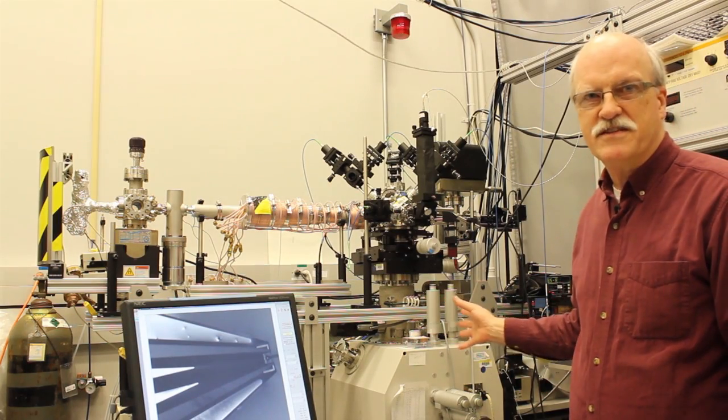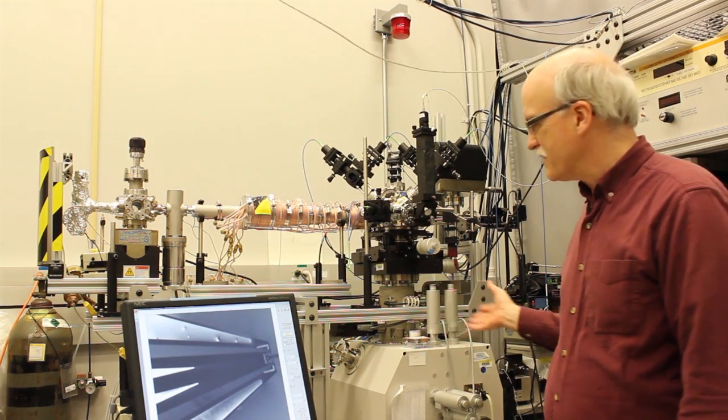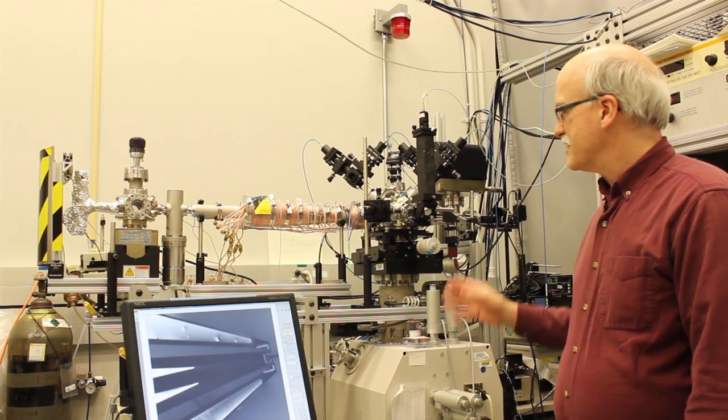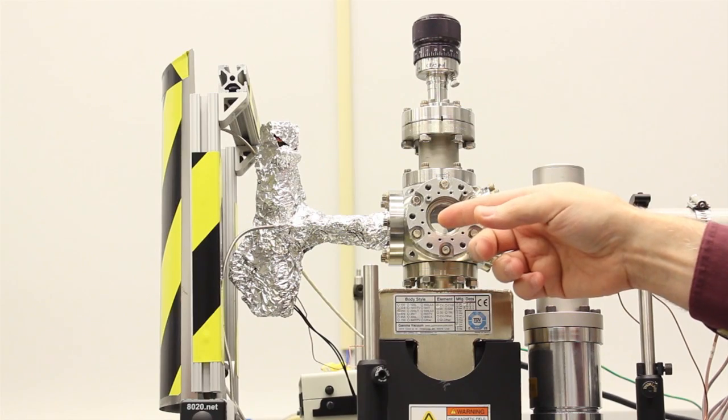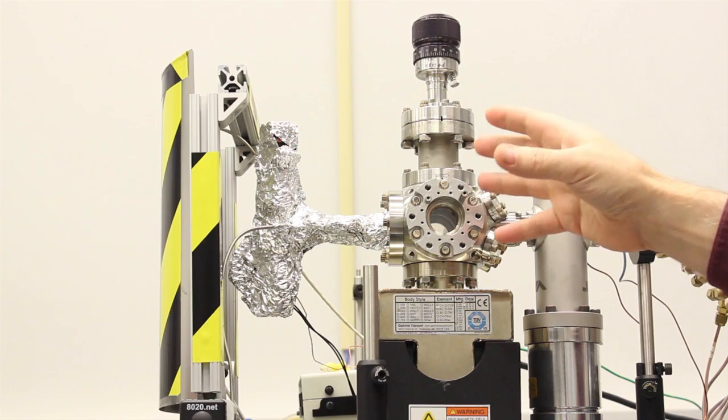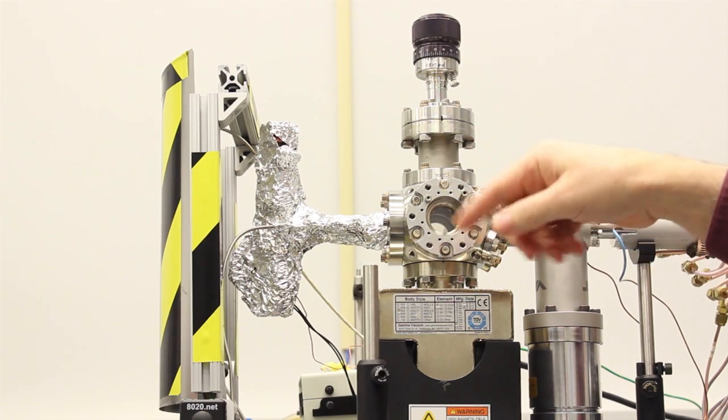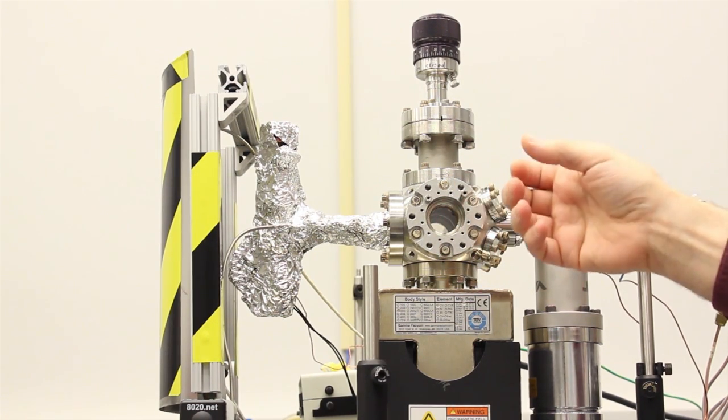It starts with a commercial system for focused ion beams, but we've heavily modified it. The lithium atoms start in what looks like a baked potato over there, which is actually a lithium oven.